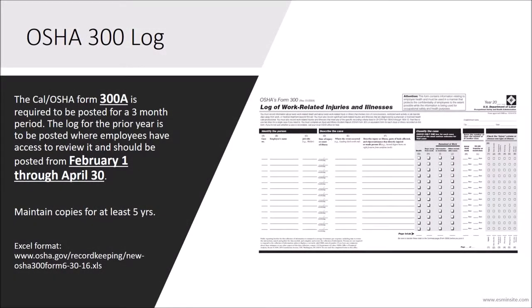As you are already aware, the OSHA 300 log must be posted in a conspicuous location from February 1st to April 30th of each year, and it must include the total number of job-related injuries and illnesses that occurred in the prior year. It is recommended that you maintain the forms for at least five years. However, OSHA does provide a form in Microsoft Excel which will allow you to complete it electronically as well as store them permanently.